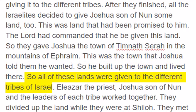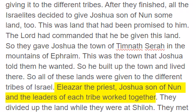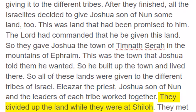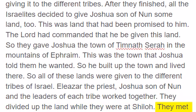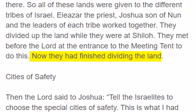So all of these lands were given to the different tribes of Israel. Eliezer the priest, Joshua son of Nun and the leaders of each tribe worked together. They divided up the land while they were at Shiloh. They met before the Lord at the entrance to the meeting tent to do this. Now they had finished dividing the land.